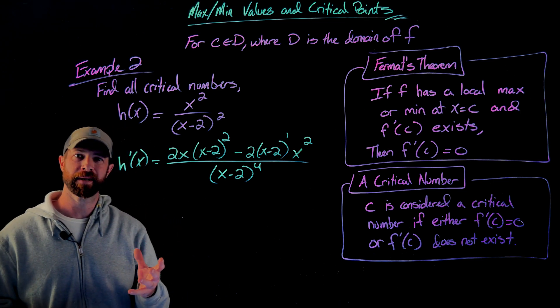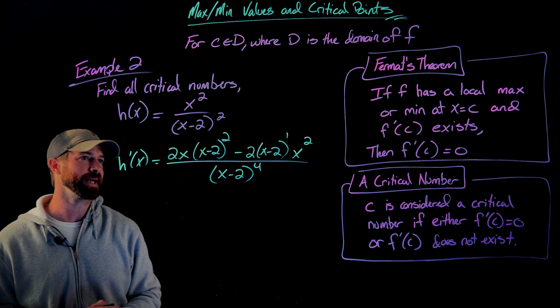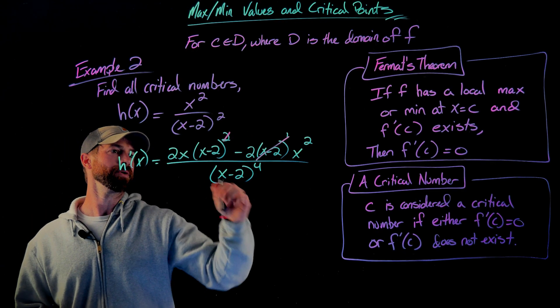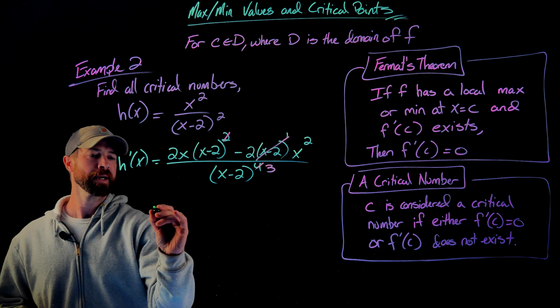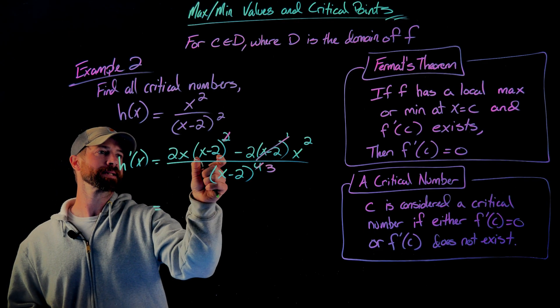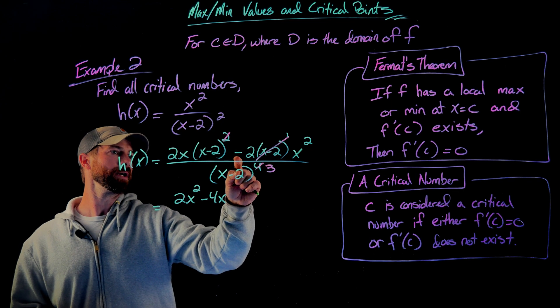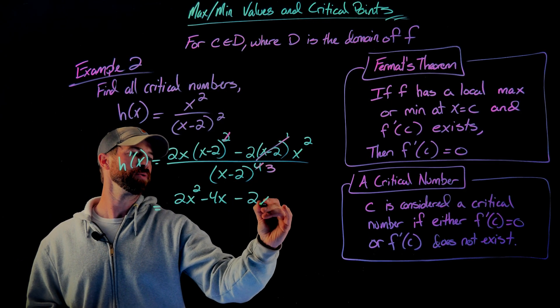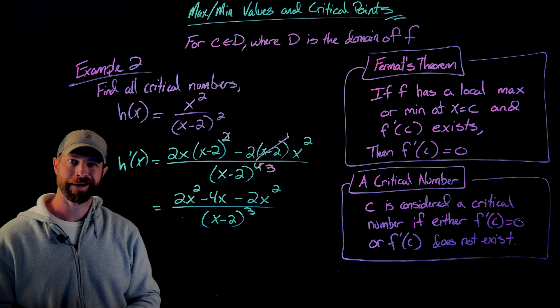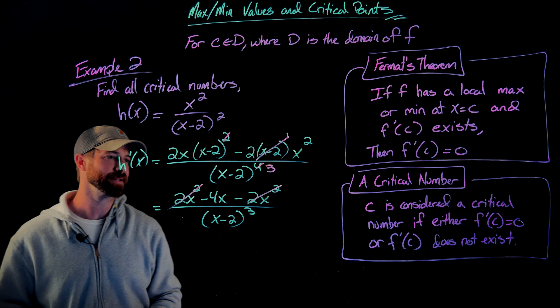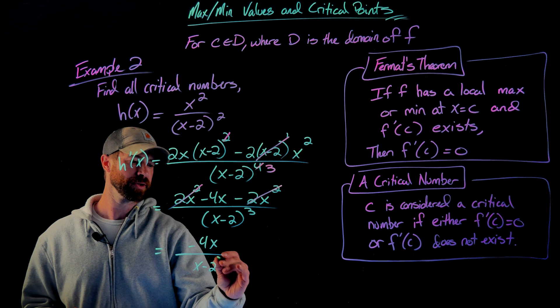Now, I've taken the derivative. I'm going to simplify this. One thing that I'm going to do to make my life a little bit easier is I see these factors of x minus 2 on both terms in the numerator, and then I obviously have a bunch of them down here. I'm going to cancel one factor of the x minus 2 from each term of the numerator with this down in the denominator just to make my life a little bit nicer. When I do this, and then I'm going to get 2x times one of these x minus 2s. So that's going to be 2x squared minus 4x. Over here, all I'm left with is just the 2 times x squared. So minus 2x squared, all over x minus 2 to the third power. Finally, these 2x squareds cancel themselves out, and I'm left with just negative 4x over x minus 2 cubed.